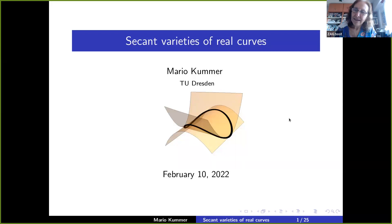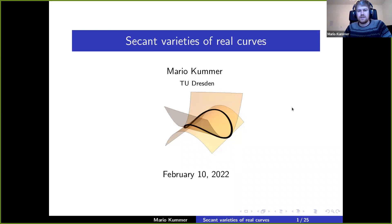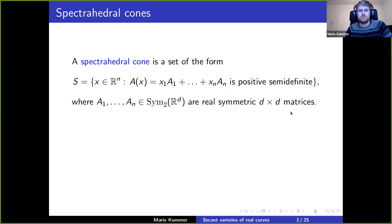Welcome everybody. I have the pleasure to introduce our next speaker, Mario Kummer from Dresden. He will tell us about secant varieties of real curves. Thank you for the invitation and for organizing this seminar series. I will talk about secant varieties of real curves, and first I will explain some motivation for why I want to study these geometric objects.